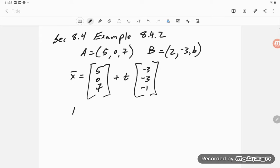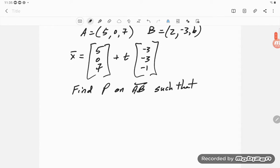And they say they want to find P on our line AB such that the distance, so when they write AP, they want the distance AP divided by the distance from P to B is equal to 3.